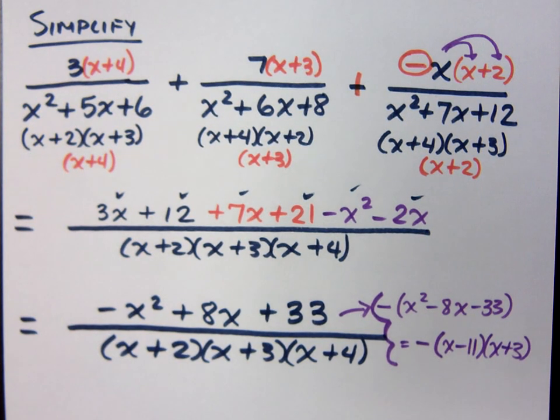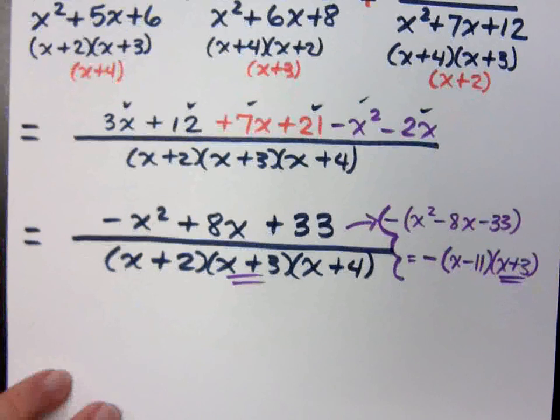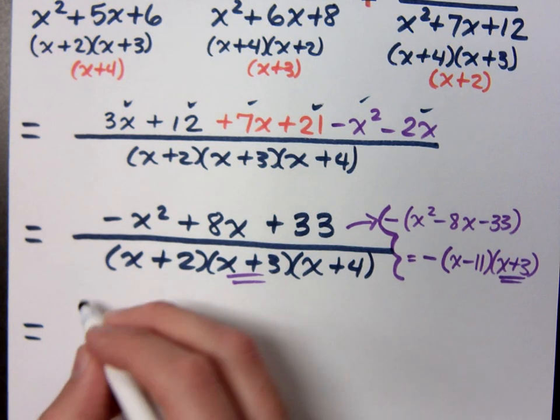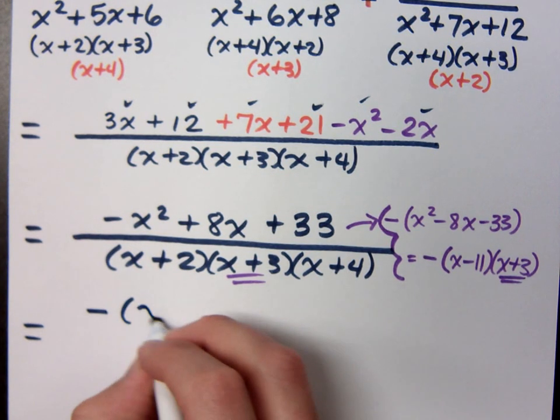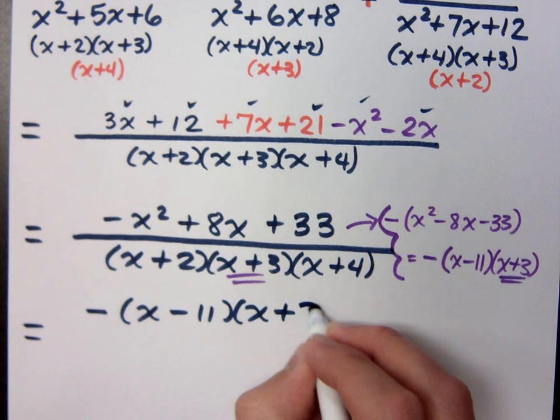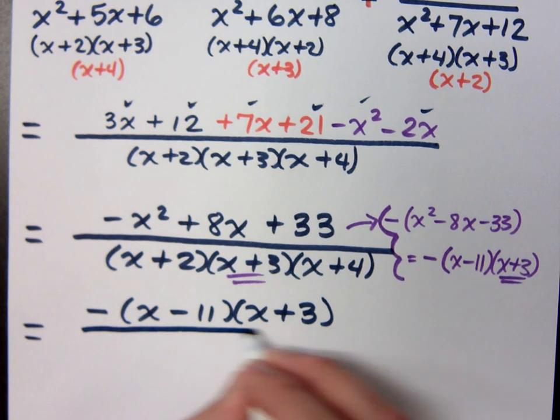Is that factorization useful for me in this problem? Check this out. I've got a plus 3 and I've got a plus 3. So this is going to be awesome. So let me rewrite this. In that numerator, it's negative times the factors x minus 11.